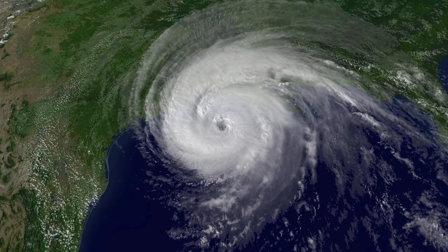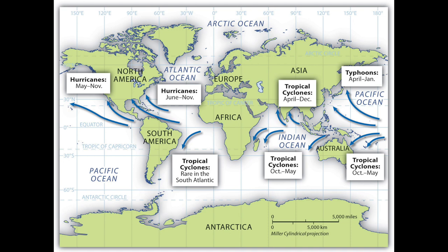Most people will know these tropical storms as hurricanes. However, in different parts of the world they are called different things. If you look at the map now, you'll be able to see that hurricanes refer to tropical storms that occur in the Atlantic Ocean. However, tropical storms that occur in the Indian Ocean are called cyclones. If they occur in the Pacific Ocean and they hit the coast of China, Japan or Northern Australia, they are called typhoons.